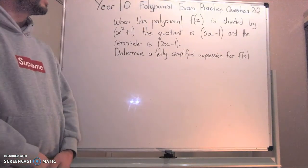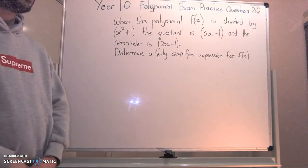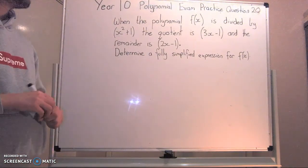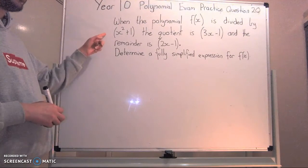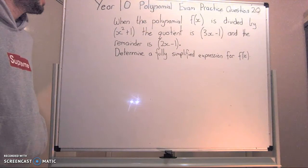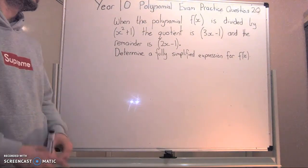Year 10 polynomial exam practice question 20. When the polynomial f(x) is divided by x squared plus 1, the quotient is 3x minus 1 and the remainder is 2x minus 1.